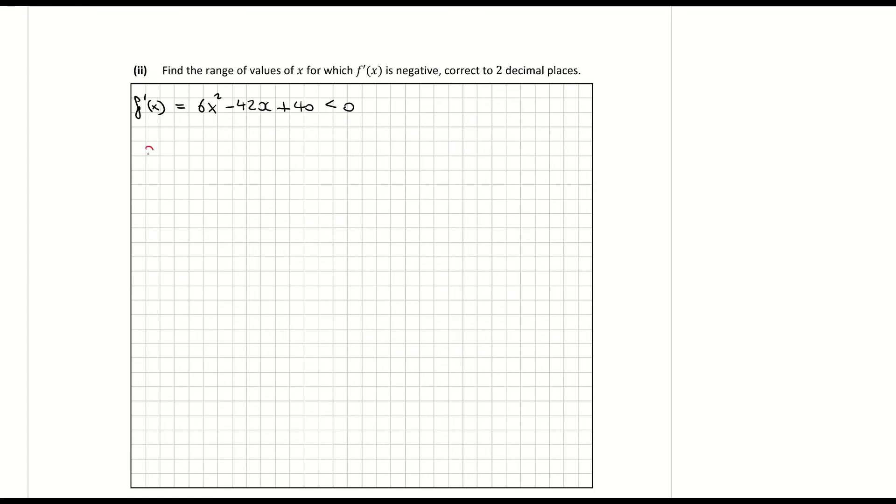Once again I'm going to my minus b formula so x is equal to minus b plus or minus the square root of b squared minus 4ac all over 2a. a is 6, b minus 42, c 40. So x is equal to minus minus 42 plus or minus the square root of minus 42 squared minus 4 times a times c.